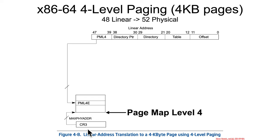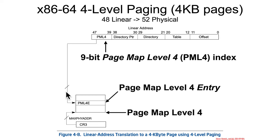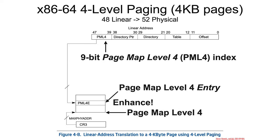CR3 gives us the physical address of the page map level 4, and for any given linear address, the top nine bits are used to index into the page map level 4 to find the page map level 4 entry. Let's go ahead and enhance.